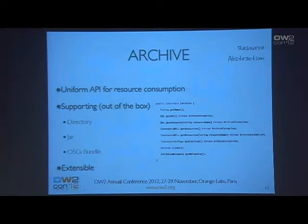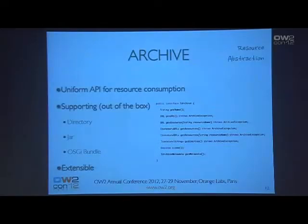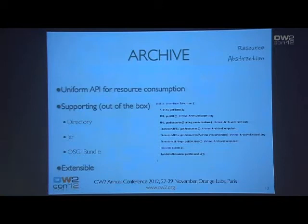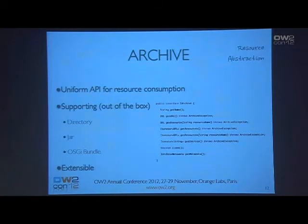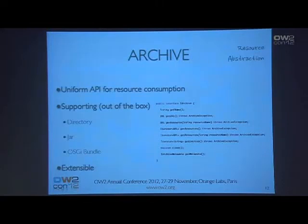We also have resource abstraction — a uniform API for resource consumption. Out of the box we support the directory system, jar files, and OSGI bundles, and it's extensible. It's simply a common API that represents an archive — something which contains other files and resources. You can get the name and URL of the archive, get resources as input stream or URL, and it's closable. It's very easy when you need to abstract yourself from the format of the resources you want to access.